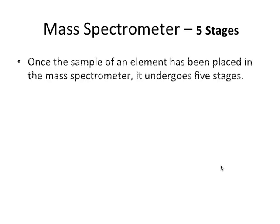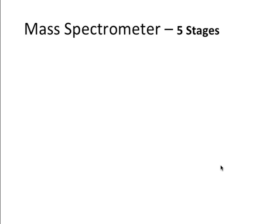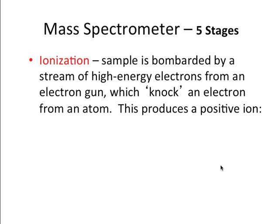Here are the five stages. First stage, vaporization. The sample has to be in the gaseous form. So if it's a solid or a liquid, a heater is used to vaporize some of the sample. The second step is ionization. The sample is then bombarded with a stream of high-energy electrons from an electron gun, which knock an electron from an atom. It produces a positive ion.